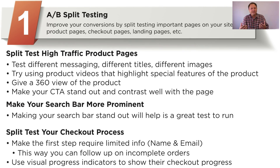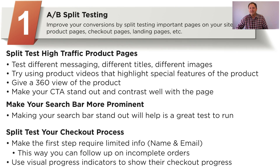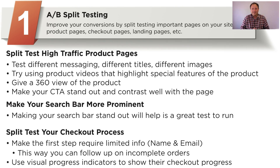So, number one: A-B split testing. I would split test high traffic product pages. The reason I say testing on high traffic product pages is because you want to test on the high traffic pages of your site — otherwise it's going to take way too long to get enough data to make your decision. Testing on these high traffic pages will help you get enough data on your experiment much quicker, and then you can implement these changes and increase your conversions much faster. Test different messaging, different titles, and different images with these products. Just like A-B split testing different copy on your advertising campaigns improves click-through rate, making small tweaks to your messaging, titles, or images will help increase your conversions as well.